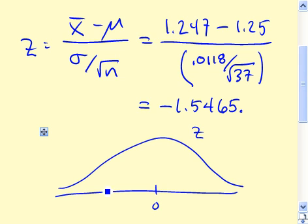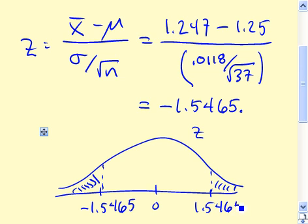So here's 0. Our test statistic is over here, minus 1.5465. So p will be equal to not just this area here, but also the area from positive 1.5465 on up.